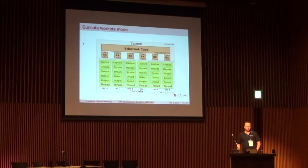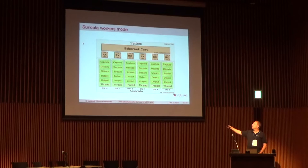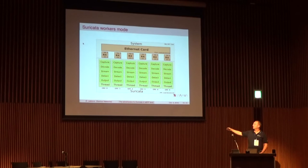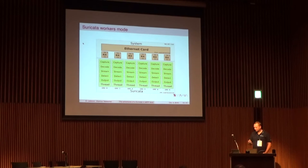The typical architecture looks like this: we have one Ethernet card, we do load balancing using RSS so we've got all the queues, we pin the CPUs, and then below each CPU we put one thread that does all the analysis — capturing the packet, decoding, reconstructing the stream, then running the detection engine, and finally outputting information if we have anything to display.